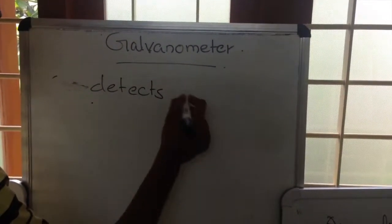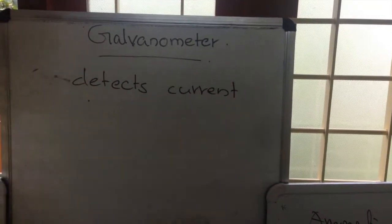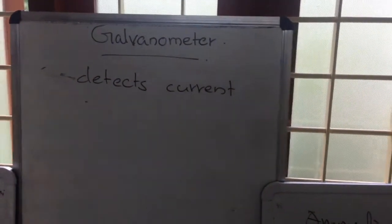If current is present in a circuit, then the presence of current can be detected by galvanometer.